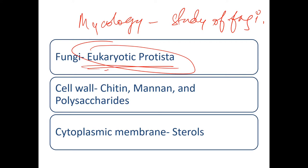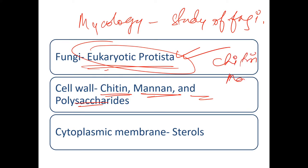The cell wall of fungi is made up of chitin, mannan, and polysaccharides. So the cell wall components are chitin, mannan, and polysaccharides.